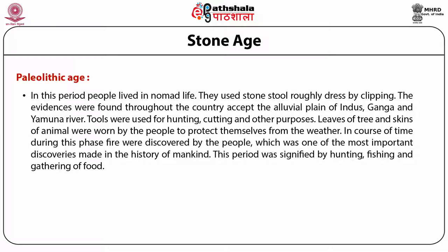Stone tools were used for hunting, cutting, and many other purposes. Leaves of trees and skin of animals were used by the people to protect themselves from the weather. In course of time during this phase, fire was also discovered by human populations, which was one of the most important discoveries in the history of mankind. This period was signified by hunting, to some extent fishing, and largely gathering food.